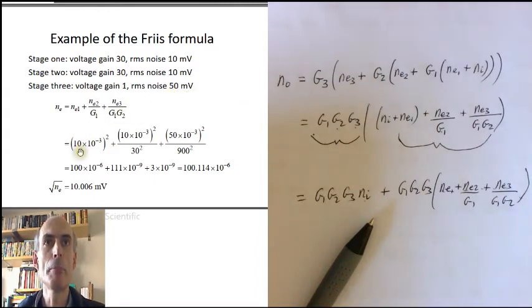Well, if we put these numbers into the formula, then bearing in mind that this is a voltage gain and the formula deals with powers and equivalent input powers, then we'd have to say that the RMS noise 10 millivolts corresponds to a noise power of 10 millivolts squared, and similarly 50 millivolts RMS of noise, 50 millivolts squared of noise power.